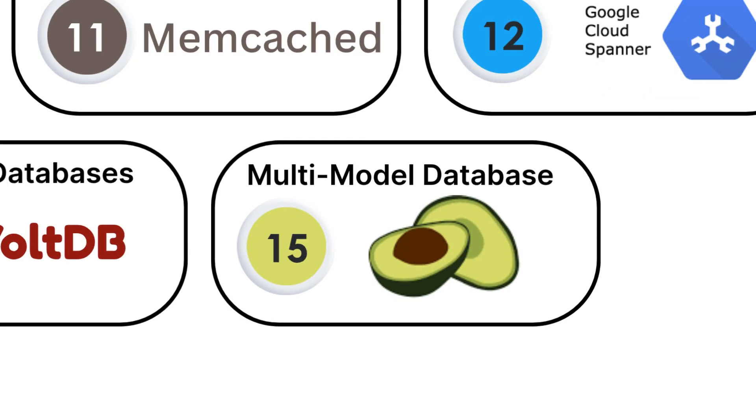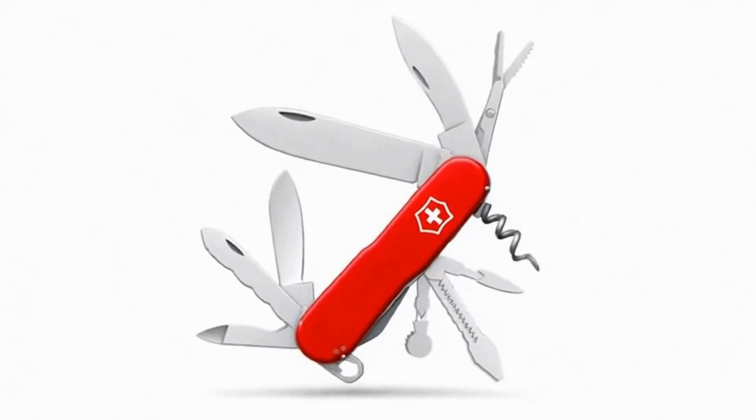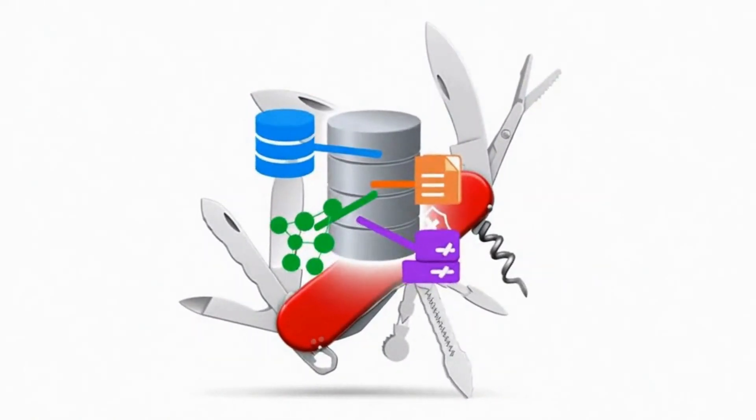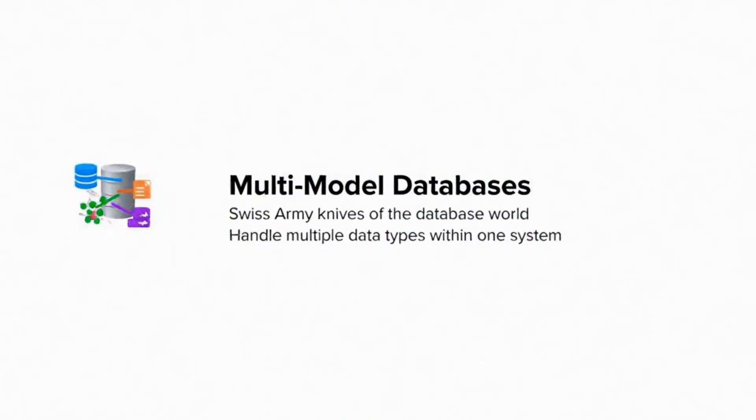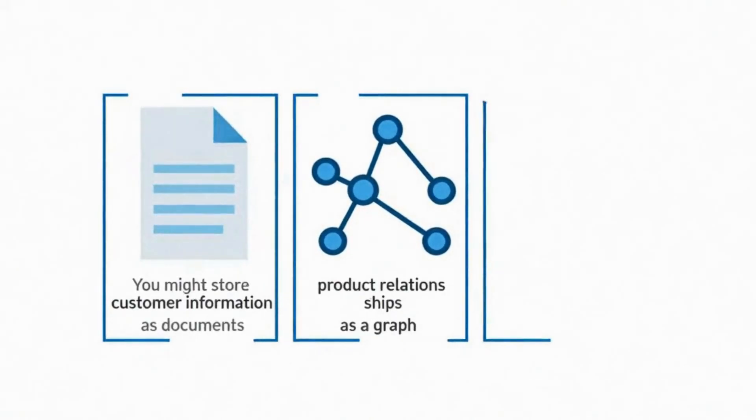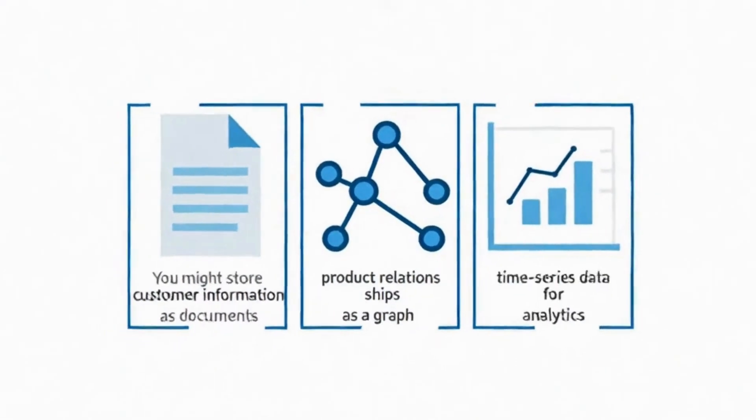Finally, multi-model databases are like Swiss army knives of the database world. Instead of specializing in one type of data storage, they can handle multiple types within the same system. You might store customer information as documents, product relationships as a graph, and time series data for analytics, all in the same database.